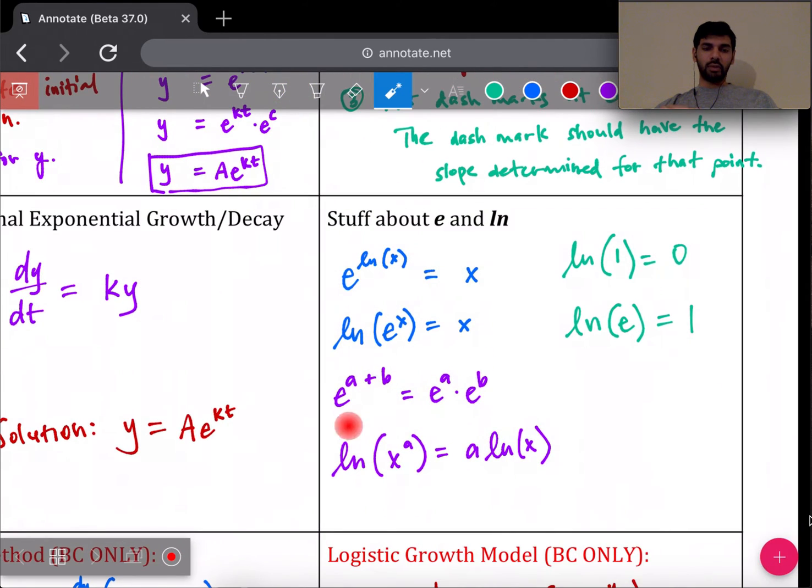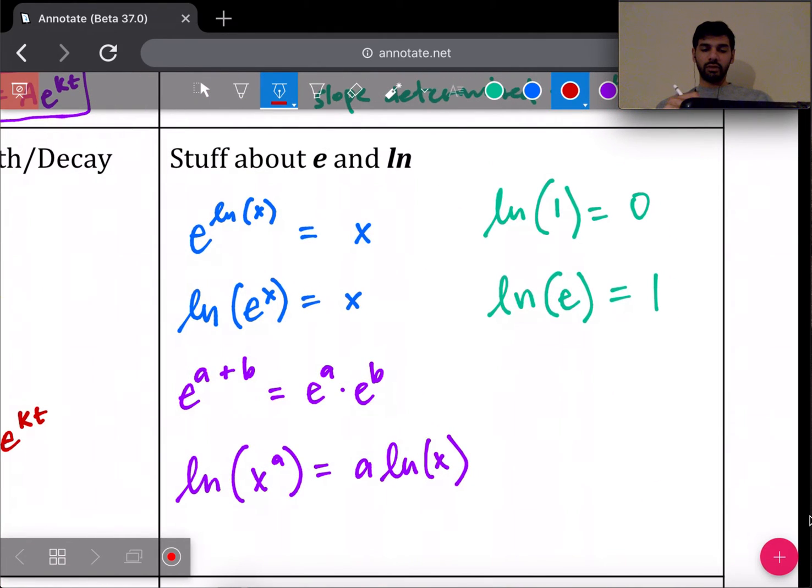There are some other properties of e and natural log here: ln(1) is always 0, ln(e) is always 1. If you want to sketch the graphs real quick, e always looks like it's above the x-axis and looks like the beginning of a cursive e. That's how I remember it, and natural log is the inverse, so you just reflect that.